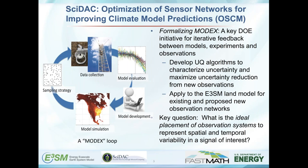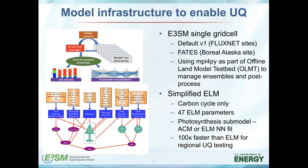The infrastructure we've developed to enable uncertainty quantification involves single grid cell studies where we've run the V1 model at a number of different Fluxnet or eddy covariance sites globally. We've also done some work with the ELM-FATES model at a boreal Alaskan site. For these single grid cell frameworks, we've developed a testbed using large ensembles of single-column ELM runs, using MPI for Python to manage them — called the offline land model testbed — to manage ensembles and do post-processing.